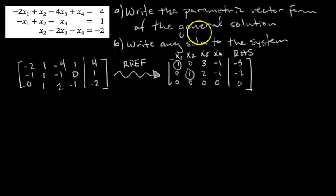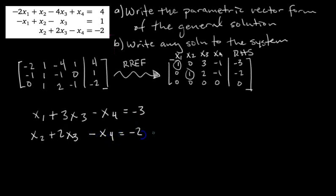So the next step to writing the solution in parametric vector form is you want to go from the augmented matrix representation back to these three written out equations. So each row corresponds to a different equation. So let's rewrite the first row as an equation. So we have 1 times x1 plus 0 times x2 plus 3 times x3 minus x4 equals negative 3. And we have, from the second row, we have x2 plus 2x3 minus x4 equals negative 2.